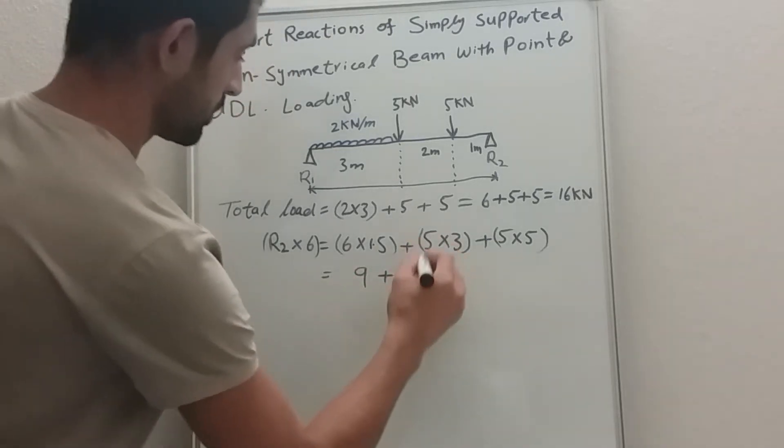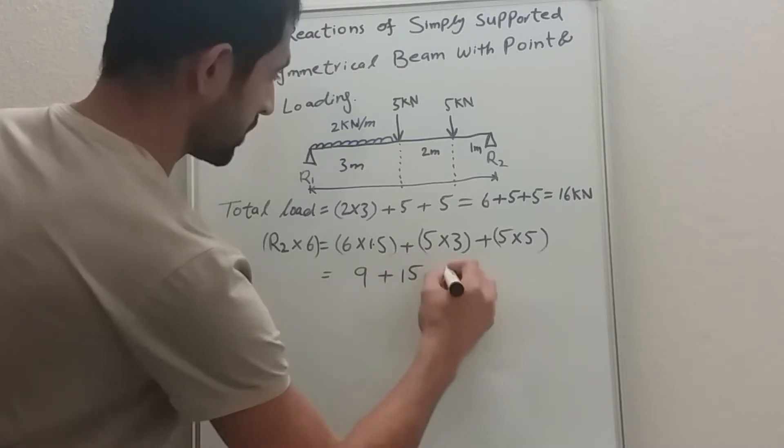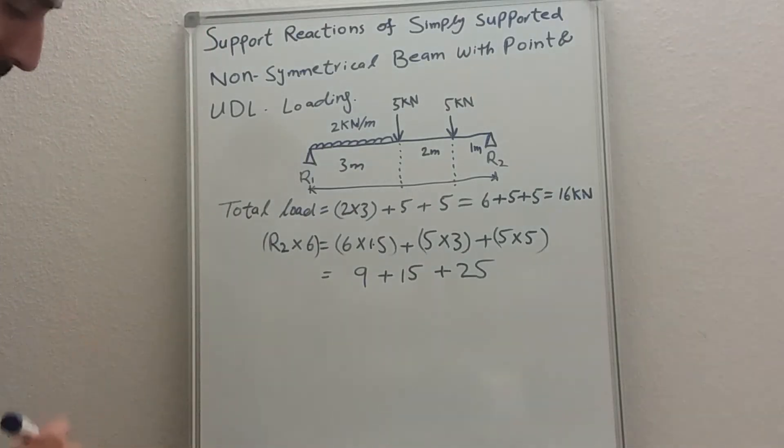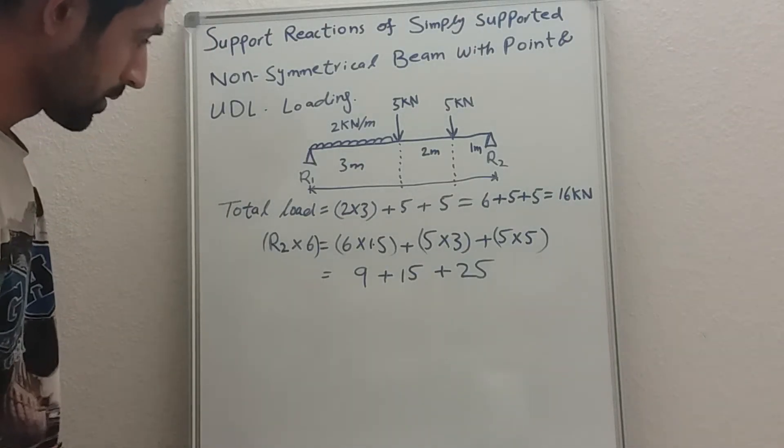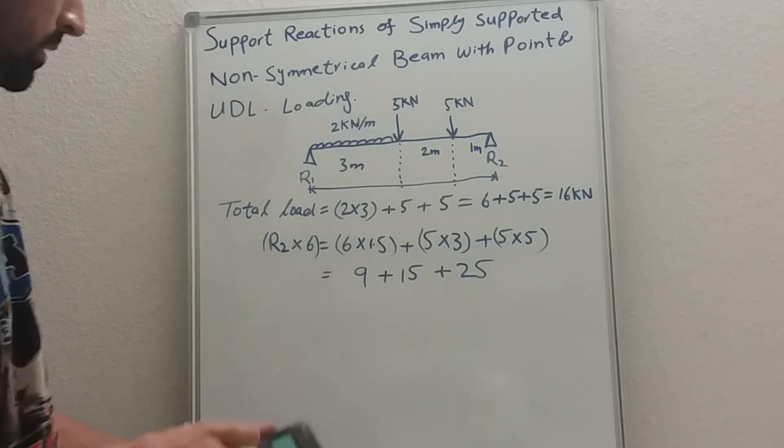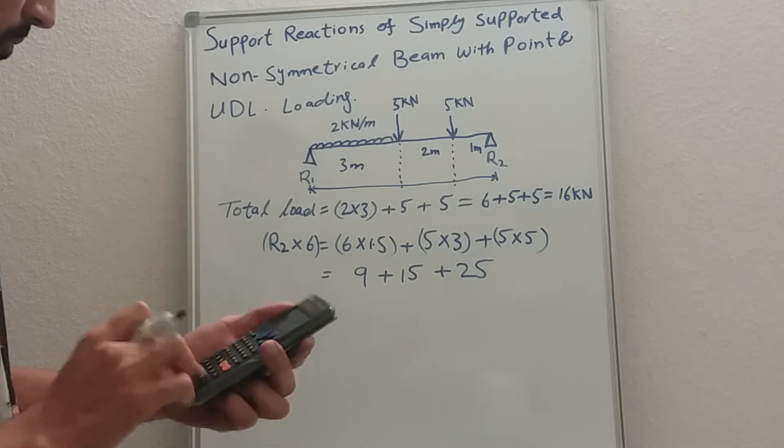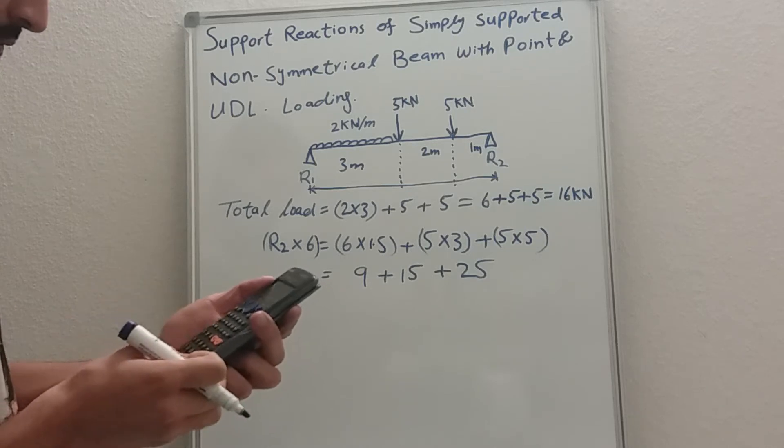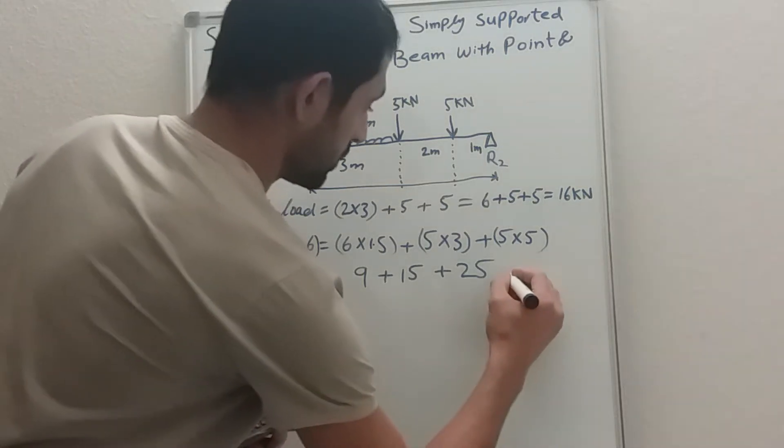So six times 1.5 will give you nine, plus fifteen, plus fifteen, plus twenty-five. So we need to add them together: nine plus fifteen plus twenty-five equals forty-nine.